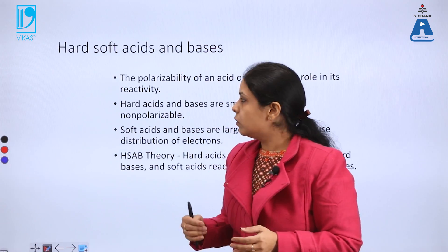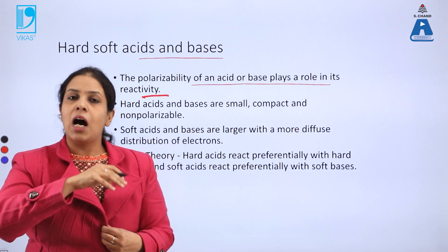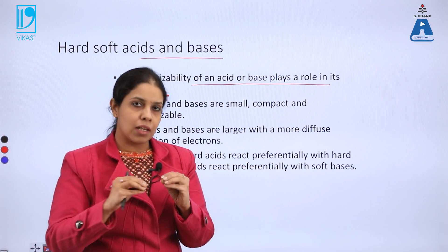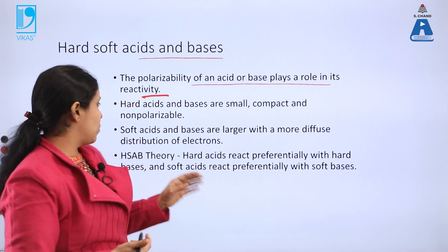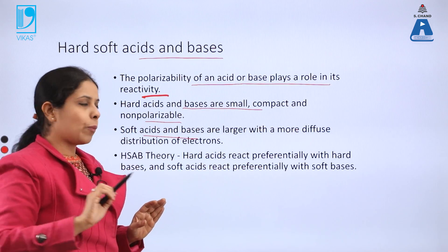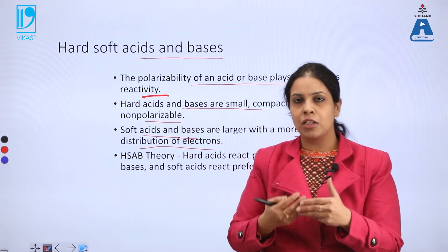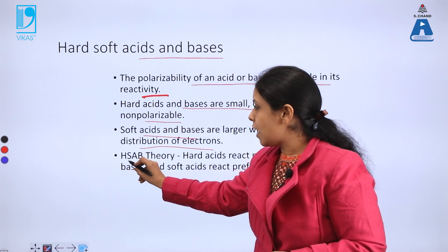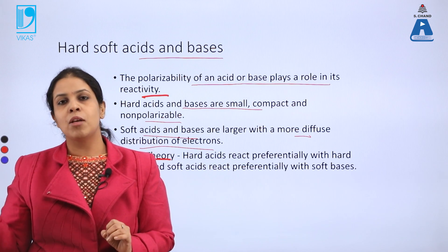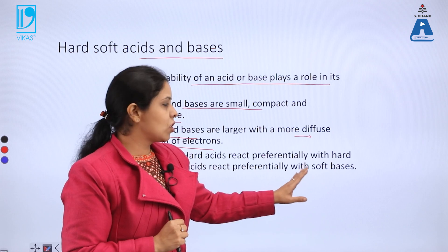The HSAB theory — Hard Soft Acid Base theory — states that the polarizability of an acid or base plays an important role in reactivity. Hard acids and bases are small, compact, and non-polarizable. Soft acids and bases have a more diffused distribution of electrons and are easily polarized. The core principle of HSAB theory is that hard acids react preferentially with hard bases, and soft acids react preferentially with soft bases.